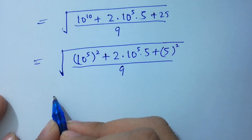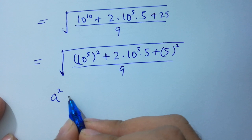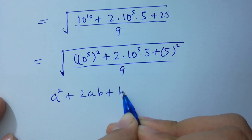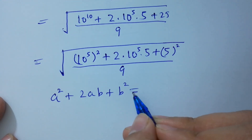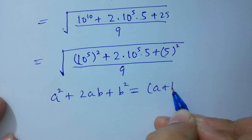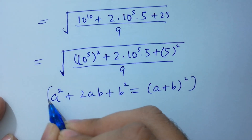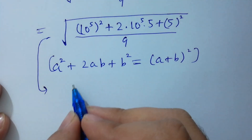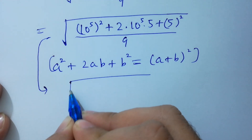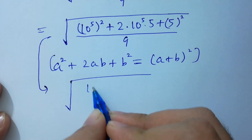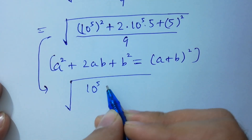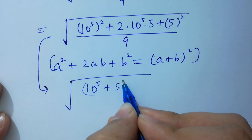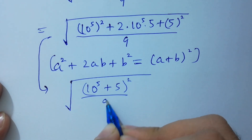This shape is like a squared plus 2ab plus b squared, which equals (a plus b) whole square. So it will be equal to square root of (10^5 plus 5) whole square over 9.